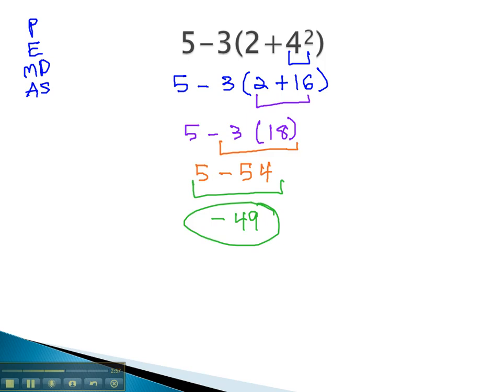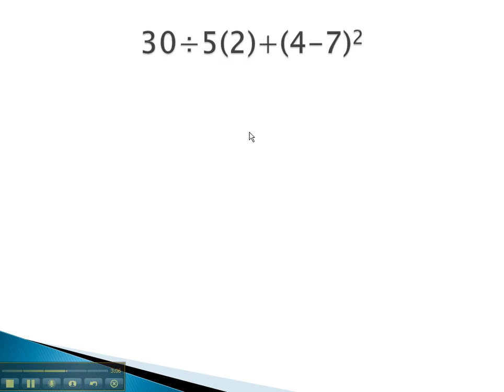Let's take a look at another problem that might be a little more involved following the order of operations. In this problem, as we keep in mind please excuse my dear Aunt Sally, or PEMDAS, first we have to start with the parentheses. In parentheses, we have 4 minus 7, so that's what we will do first.